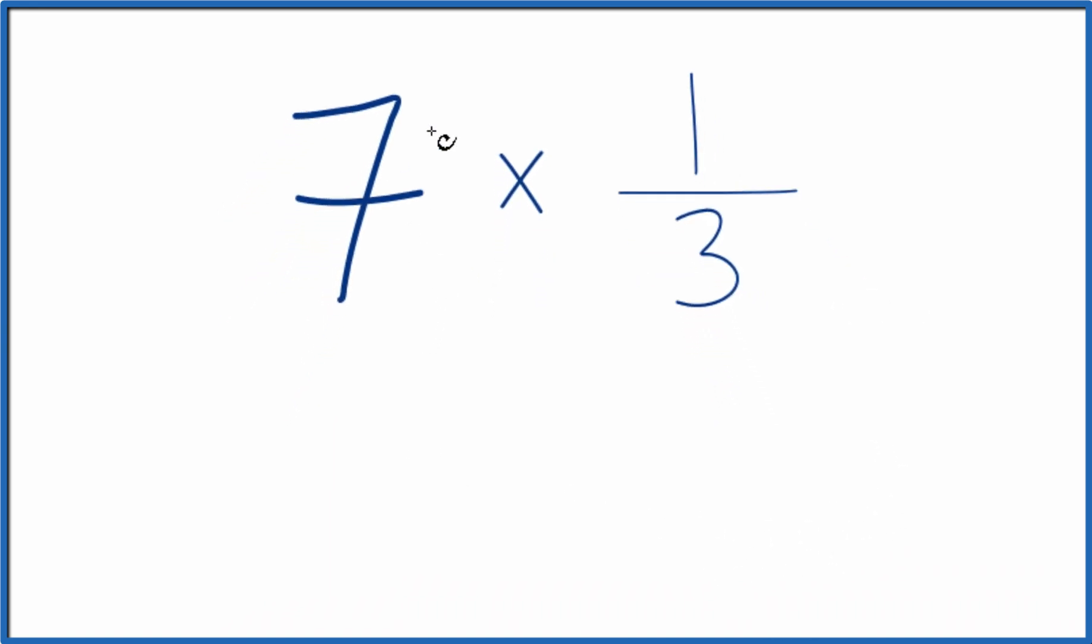Maybe an easier way, though, would be to take seven, call this seven over one. Seven divided by one, still seven, but now we have a fraction.